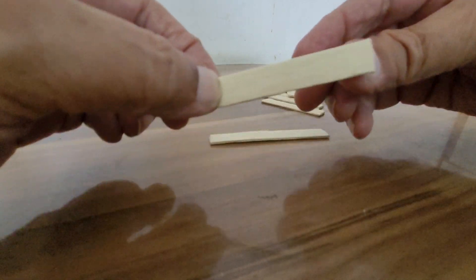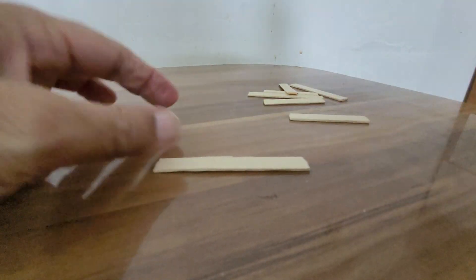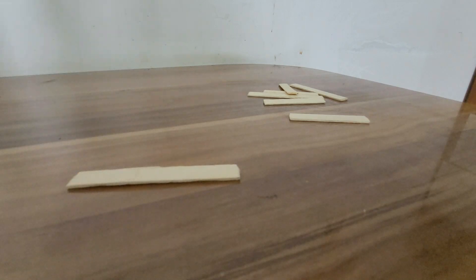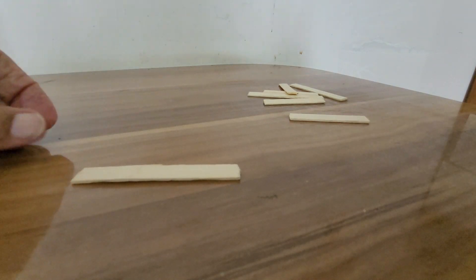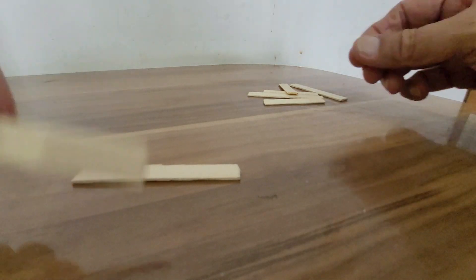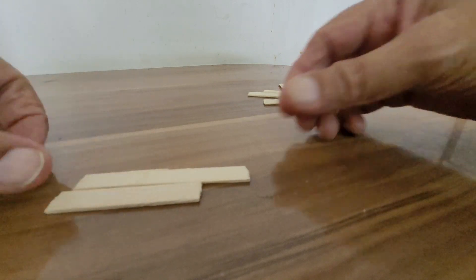To find the LCM of 8 and 6, take first the 8 rod. This is the longer one here. Place it on the table. Now the other one, the smaller one, should be placed just below that.